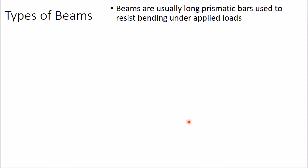To determine support reactions of a beam, we must know what is a beam and what are the different types of beams in common use. Beams are usually long prismatic bars used to resist bending under applied loads.